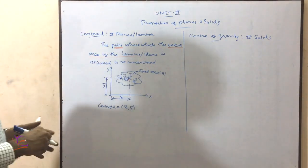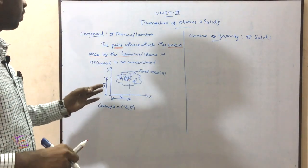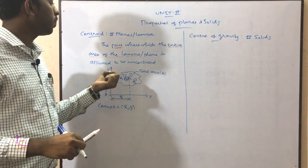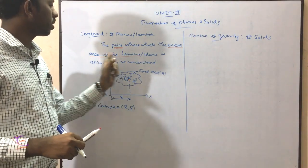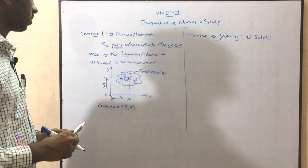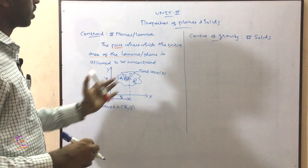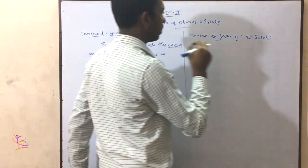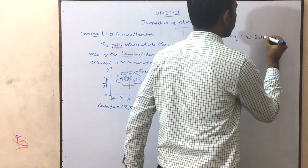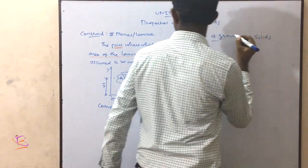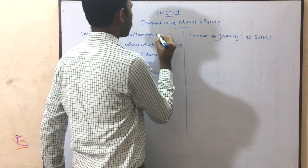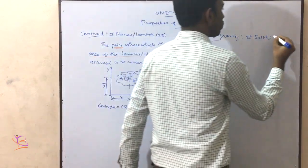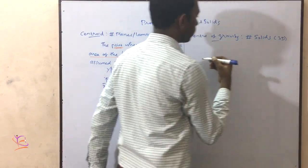The centroid is specifically applicable only for the plane or lamina — this is for 2D. The next term, centre of gravity, is applicable only for solid elements — this will be for 3D.